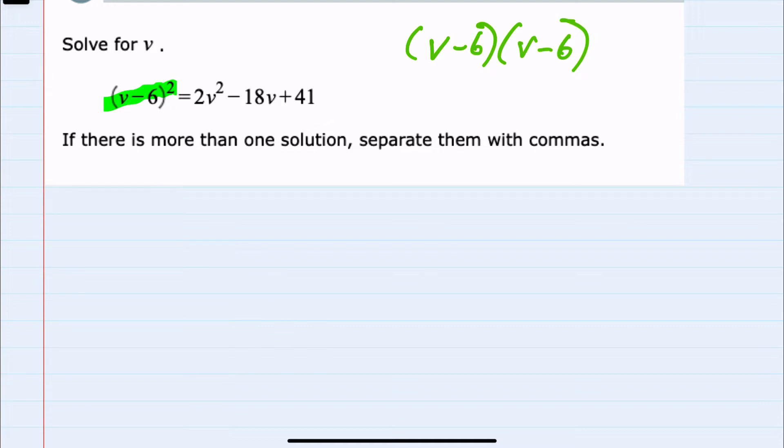Either way, using the formula or the FOIL method will give us, on the left-hand side, v² minus 12v plus 36. And I'll bring down the right-hand side, 2v² minus 18v plus 41.